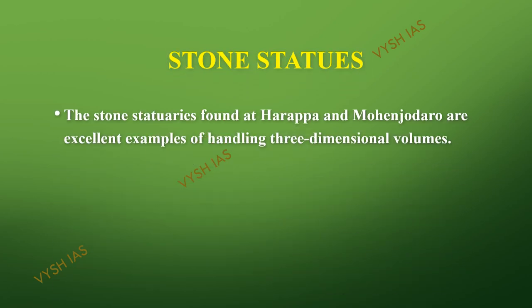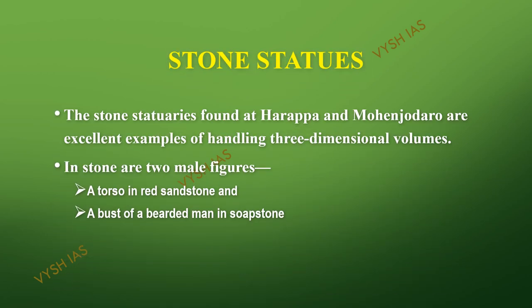First we are going to see about the stone statues. The two main stone statues found here are the torso in red sandstone and a bearded man in soapstone. These were the two important art forms, and we are going to see them in detail.